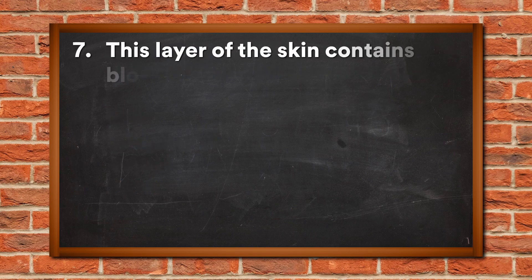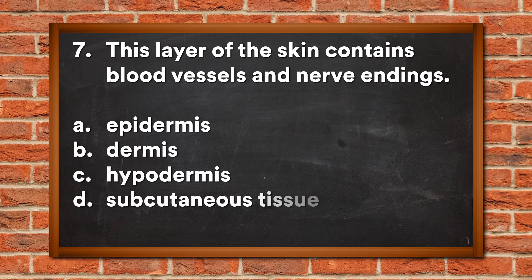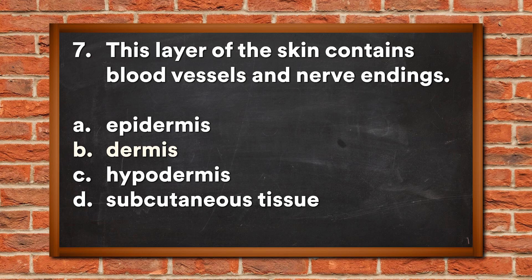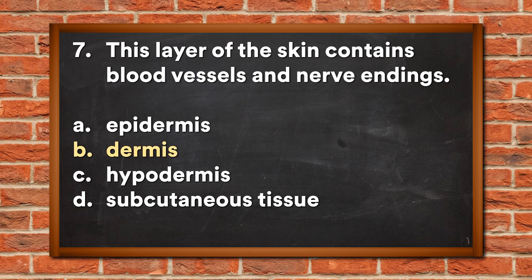Question 7: This layer of the skin contains blood vessels and nerve endings. A. Epidermis, B. Dermis, C. Hypodermis, D. Subcutaneous tissue. The answer is B, Dermis.